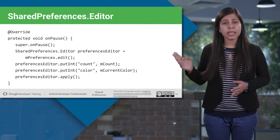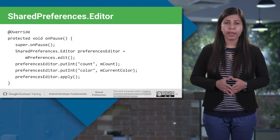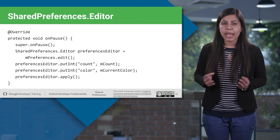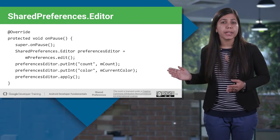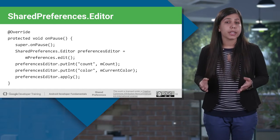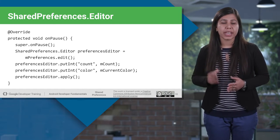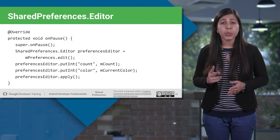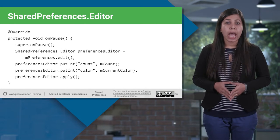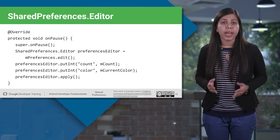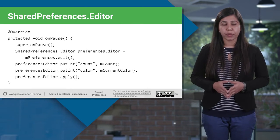This is how we save data in onPause. Call edit to get a Shared Preferences editor instance, and add the data with methods such as putInt to store an integer value with a key. Here we are adding two integer values as preferences. Finally, call apply to save all the values in the Shared Preferences.